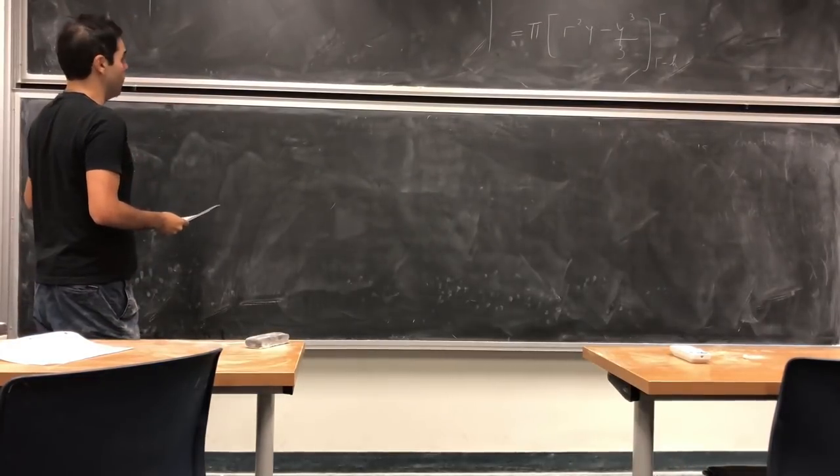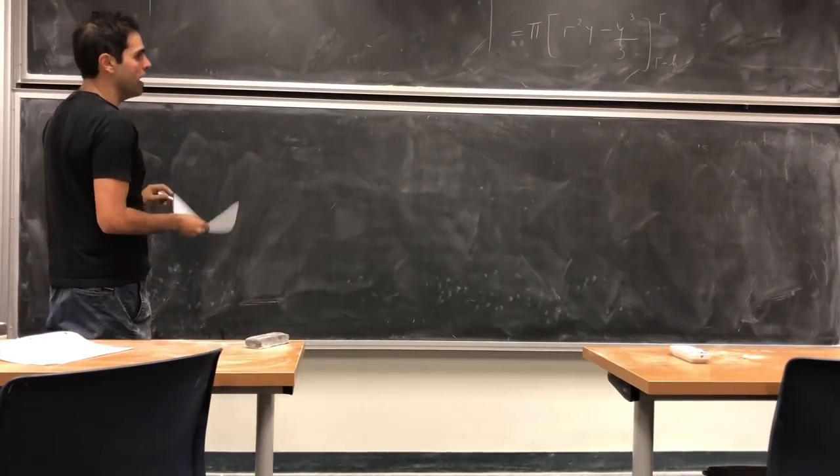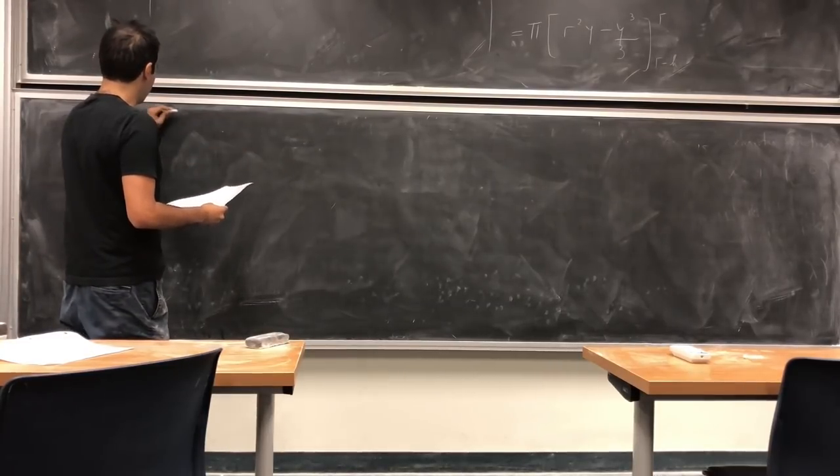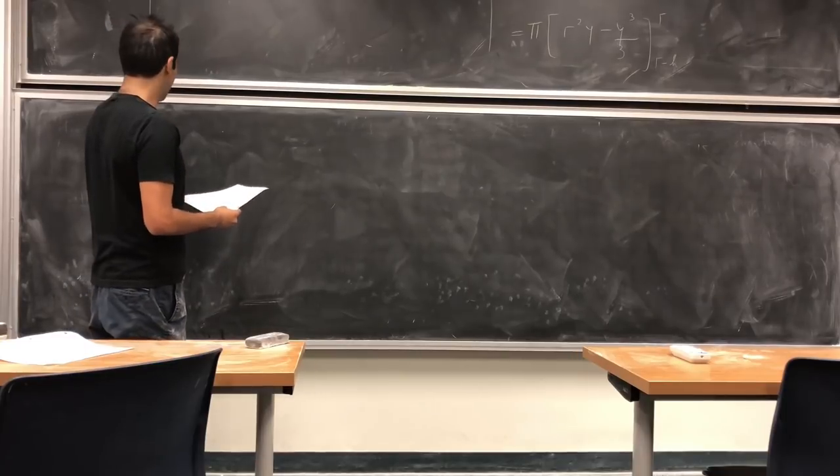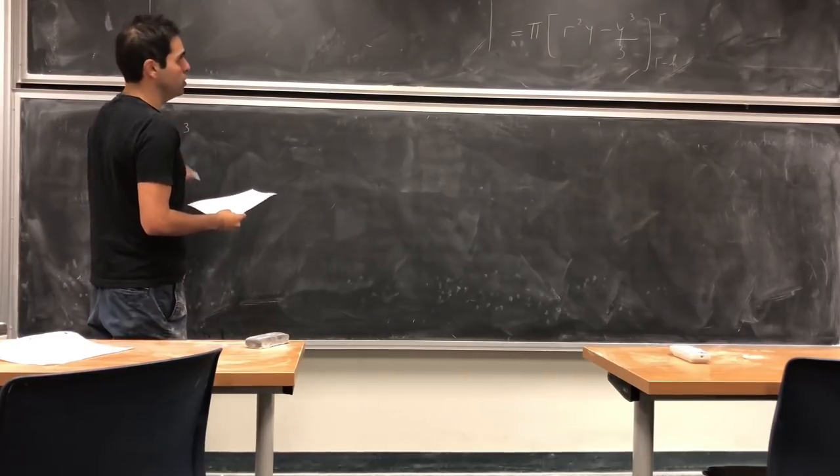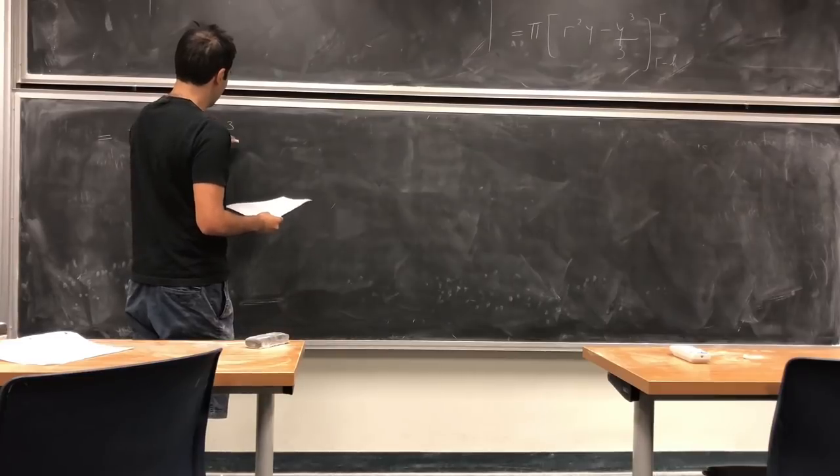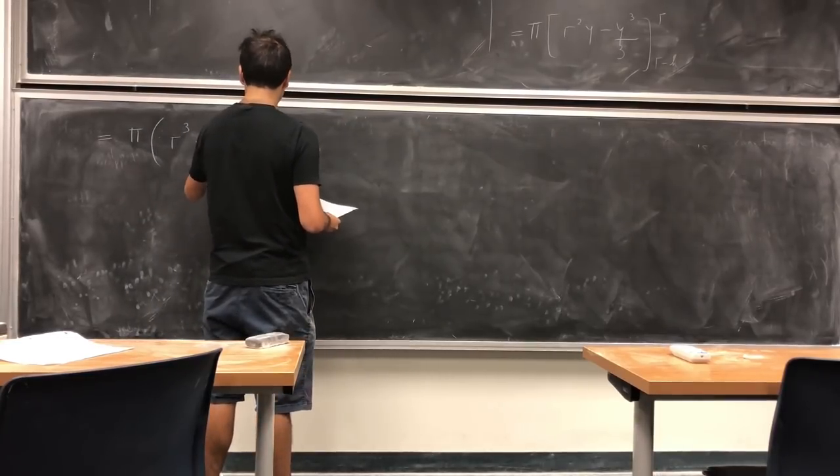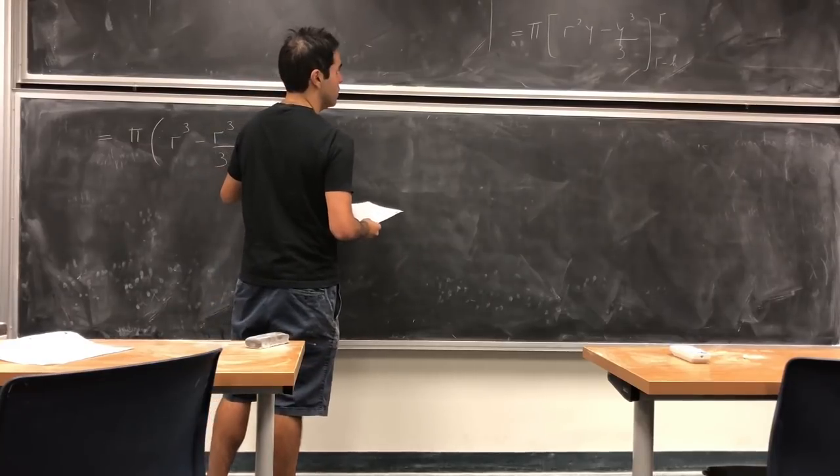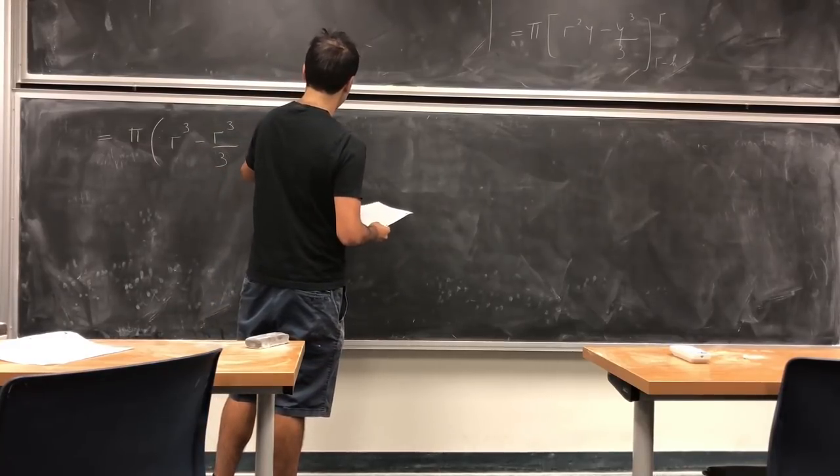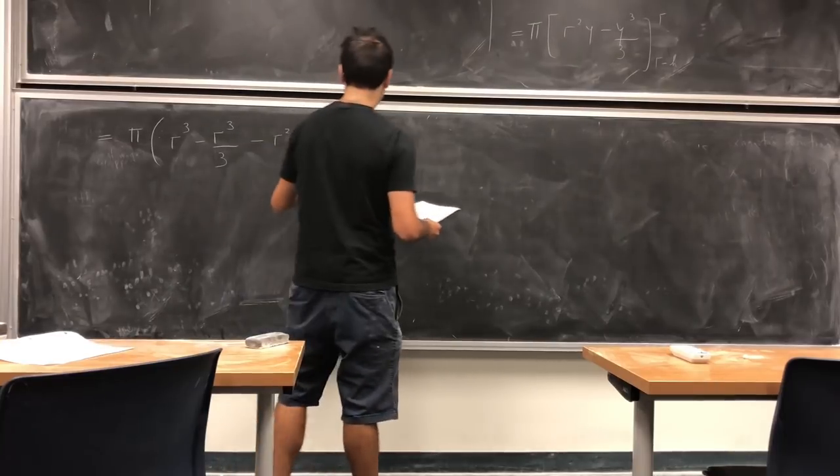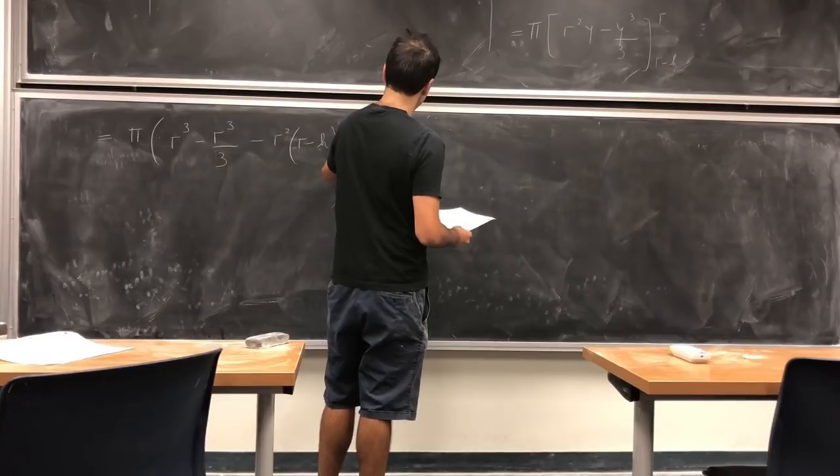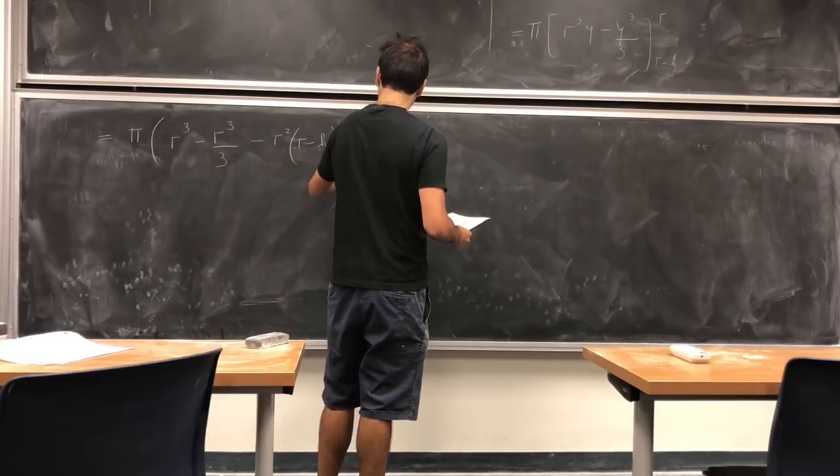Okay, now let's evaluate y equals r and y equals r minus h in our previous formula. So then we get π(r³ - r³/3) minus [r²(r - h) - (r - h)³/3].